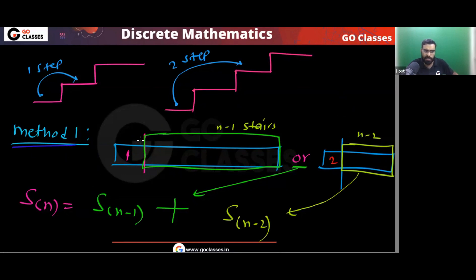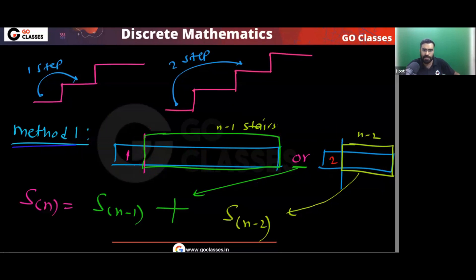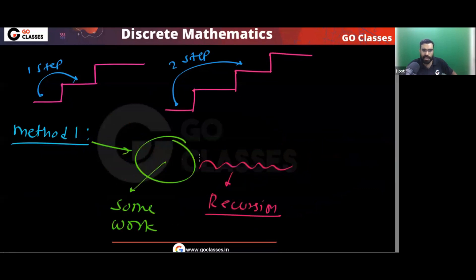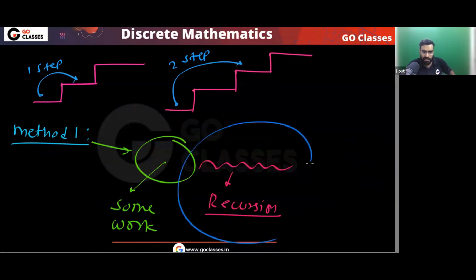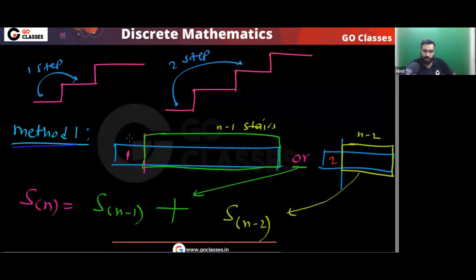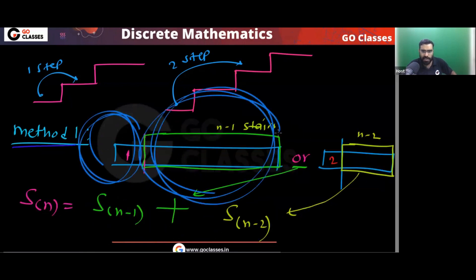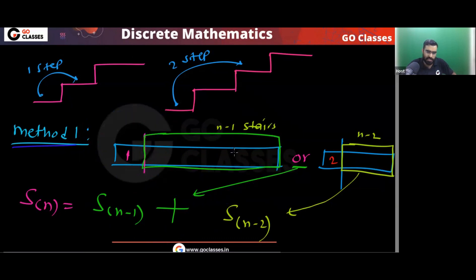In method number one, in the beginning I am doing some work — either I start with one step or two steps. Then I apply the recursion. If I take one step in the beginning, then I need to climb N-1 stairs. If I take two steps in the beginning, then I need to climb N-2 stairs. This is method number one.